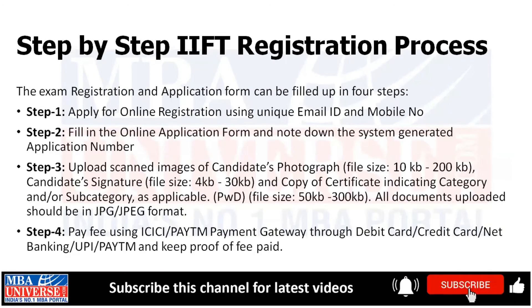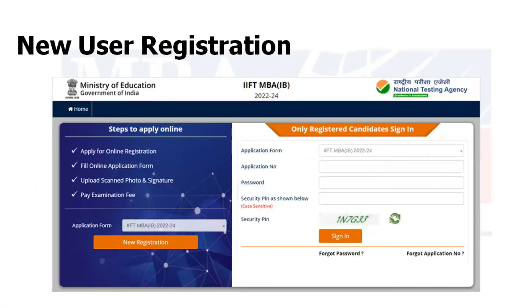What is the step-by-step IIFT registration process? The first step is to apply using your email ID and mobile number, fill the registration form, upload the application form, fill the online registration form, and make the online fee payment. For step one, you go to the NTA IIFT website, and click on 'New Registration'.